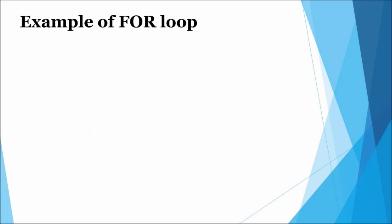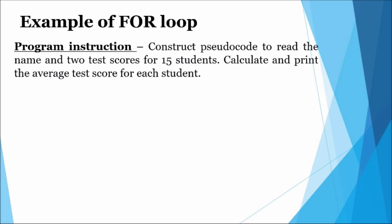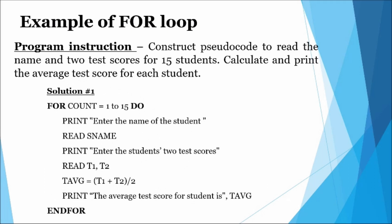Example of for loop: the following problem statement requires a pseudocode to read the name and two test scores for 15 students. The algorithm is then required to calculate and display the average test score for each student. The solution shows the for loop header that contains the 'for' keyword, the counter variable 'count', the starting value one, and the ending value 15, which indicates the total number of times the loop will be executed. The compound statement within the for loop outlines the actions to be repeated for all 15 students.